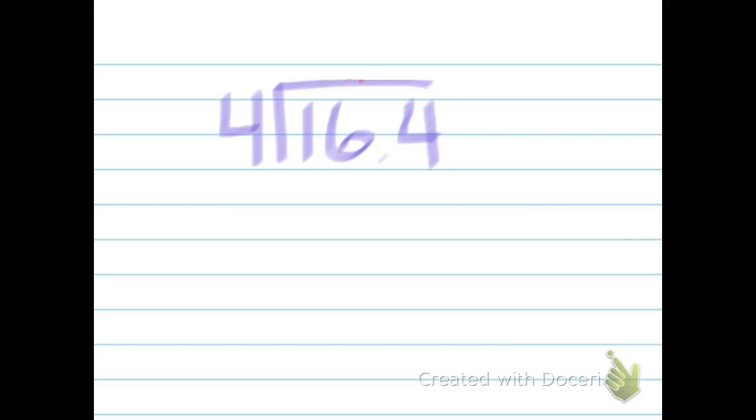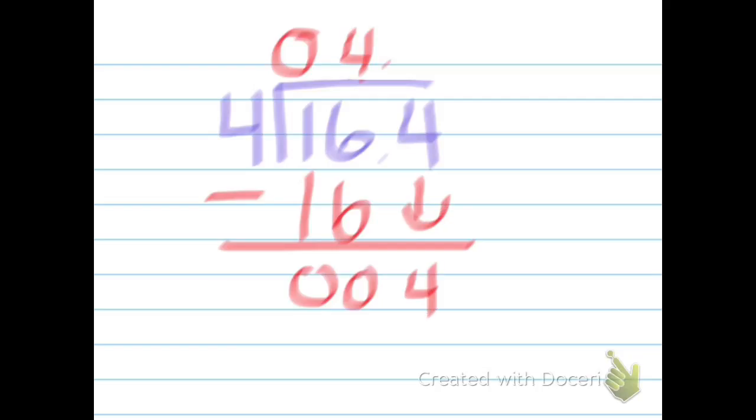First, I know that 4 can't go into 1, so it's 0. Then you've got to bring your decimal up. I know that 4 can go into 16 four times, so you put your 4 on the top. 4 times 4 is 16, so then you subtract 16 from 16, and then bring down the 4 in the decimal.